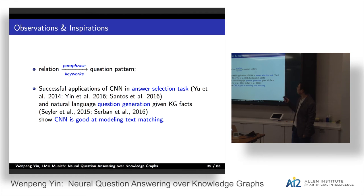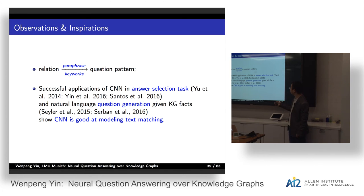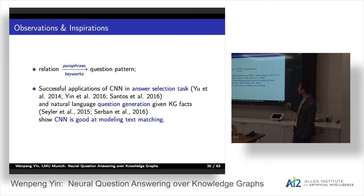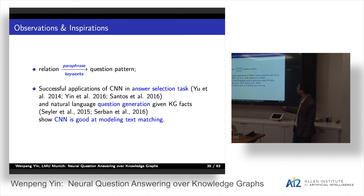A relation is usually a paraphrase or keyword for the question pattern — where 'question pattern' means we neglect the entity and only consider the remaining words. Successful application of convolutional neural networks on answer selection and question generation tasks shows that CNNs are good at text matching. So this work uses a convolutional neural network to solve the single-relation question answering.